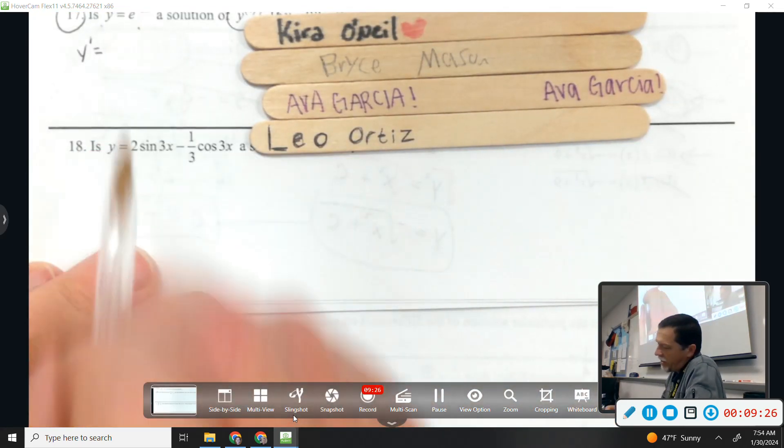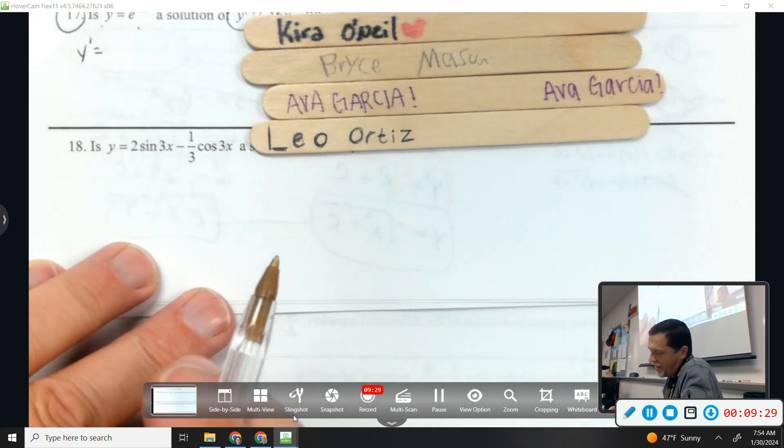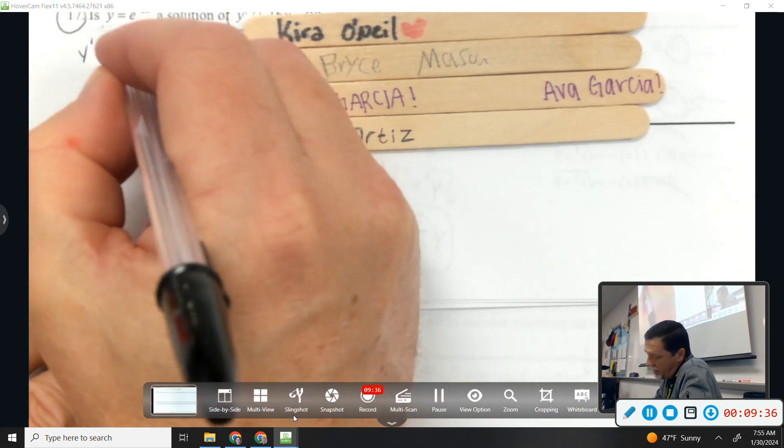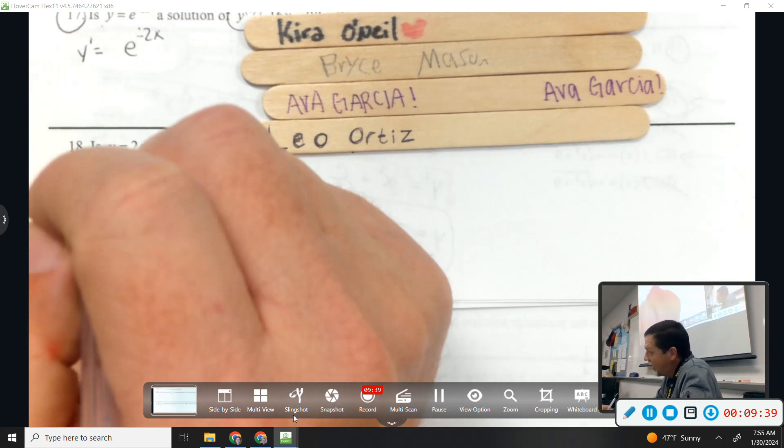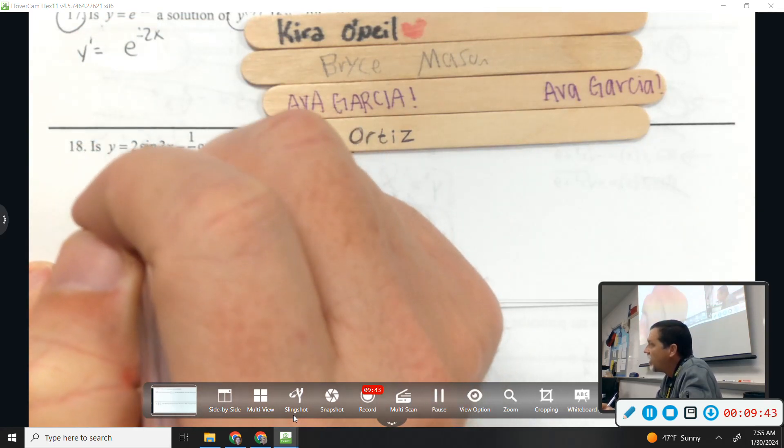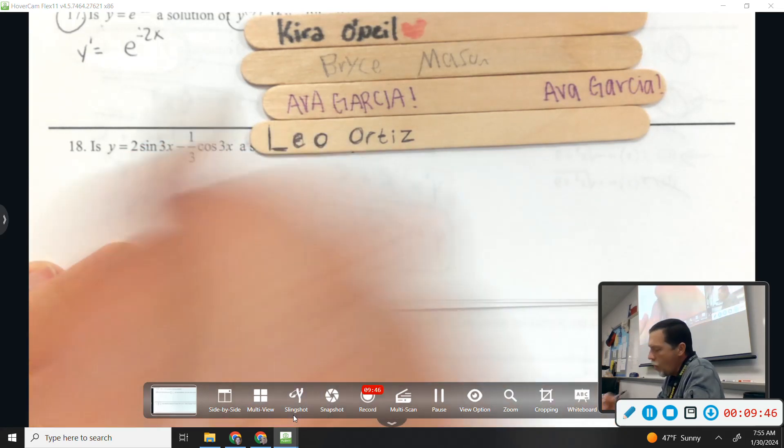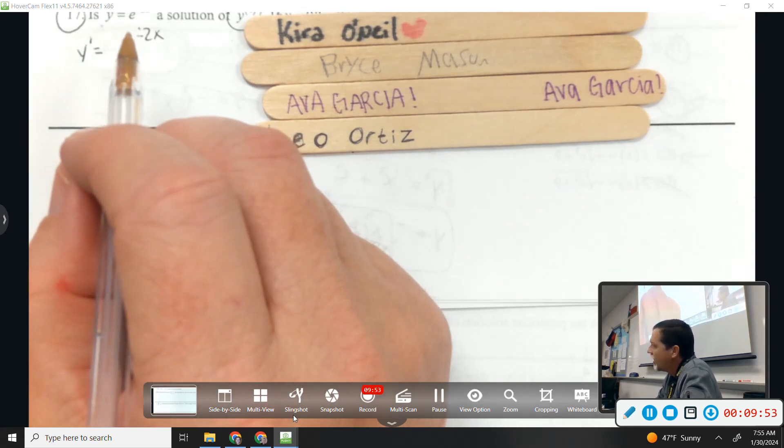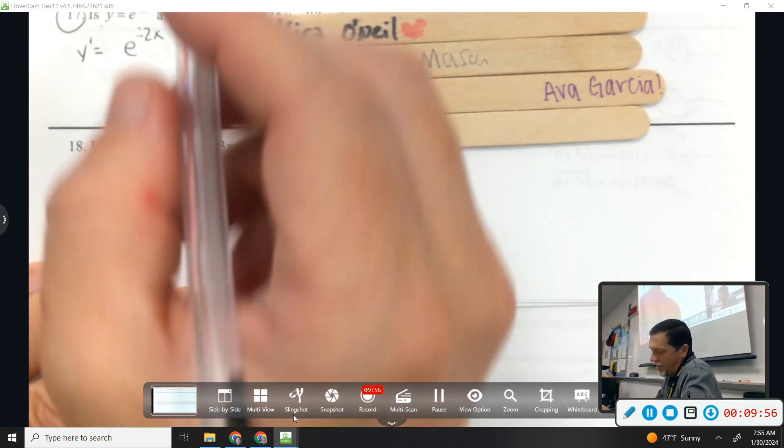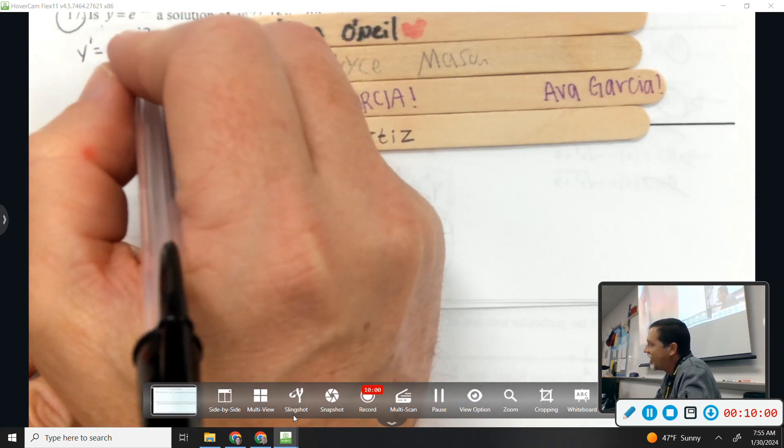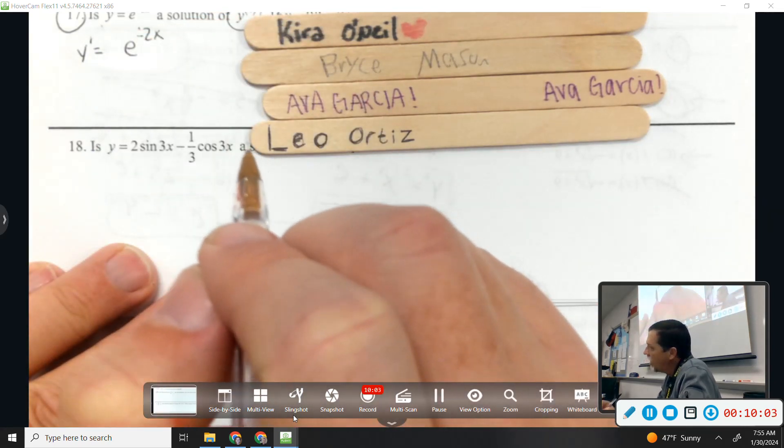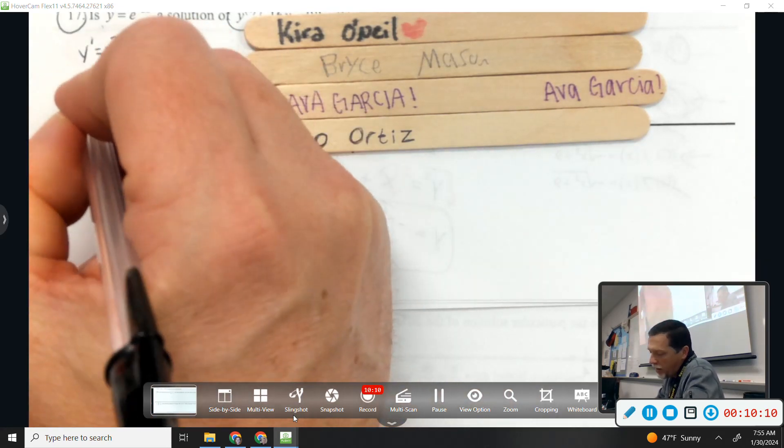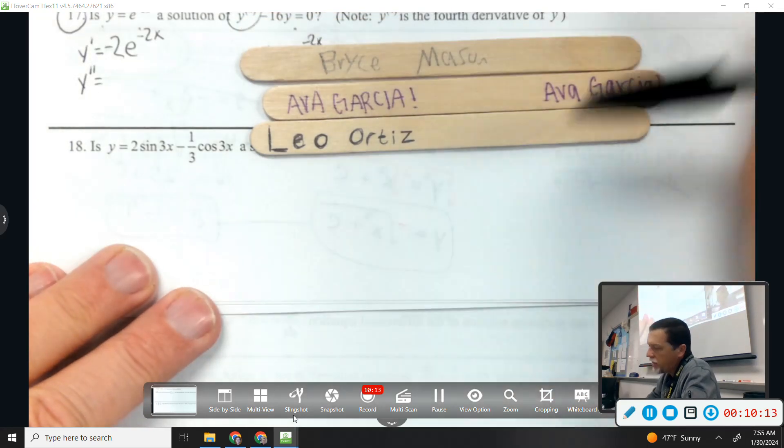So Kira, what's the first derivative of e to the negative 2x? Oh, so close. Chain rule, I want the derivative of negative 2x. So what's the derivative of negative 2x? Not x. You're thinking anti-derivative. Oh, okay, so it's just 2. Negative 2. So yeah, keep the e the same, but then multiply by the derivative of the exponent. Chain rule.